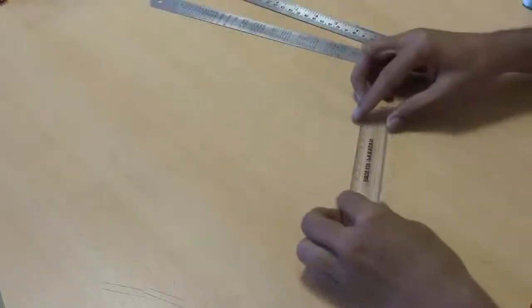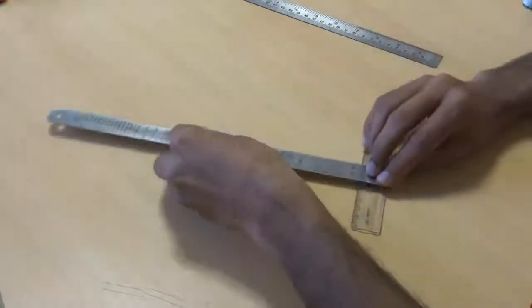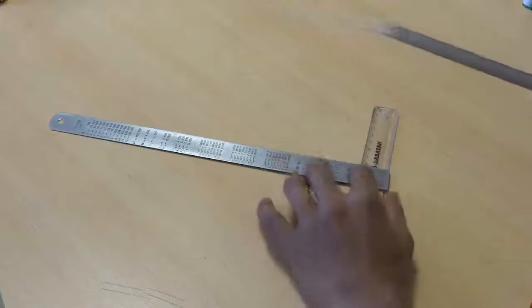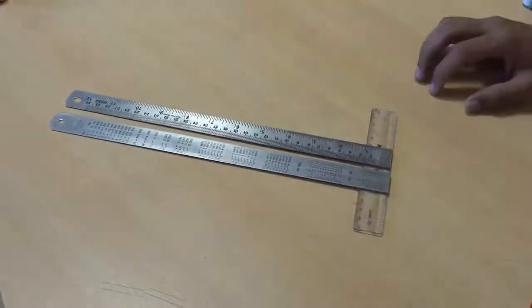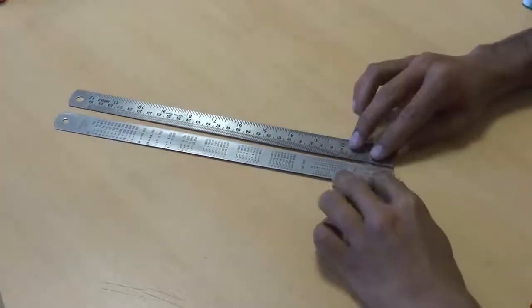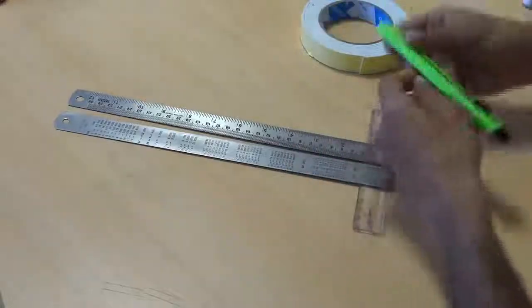So take the short scale and connect the long scales like this. So this is a basic framework. Using a double-sided gum tape and a cutter, let's fix this.